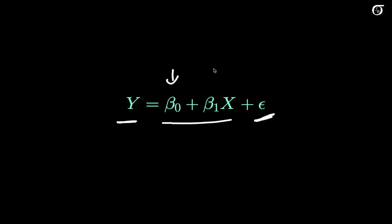Beta naught and beta 1 are parameter values, values of parameters, the true intercept and the true slope. And like most statistical problems, we're not going to know what those are. And so we're going to want to estimate them.